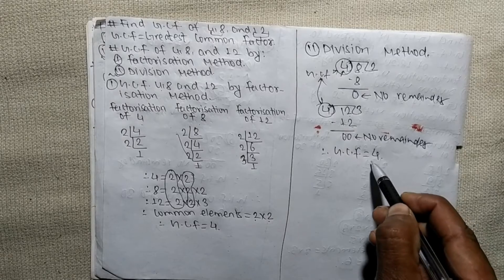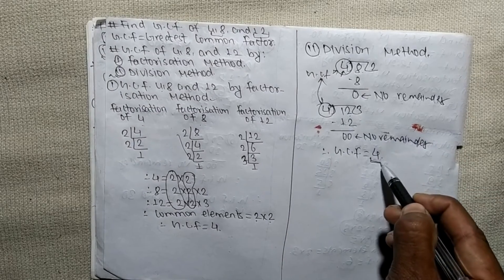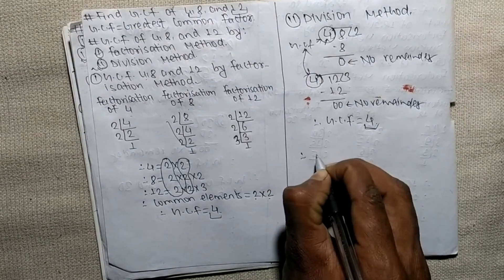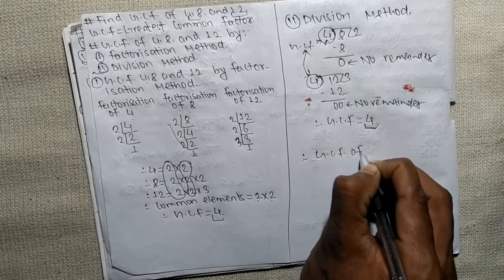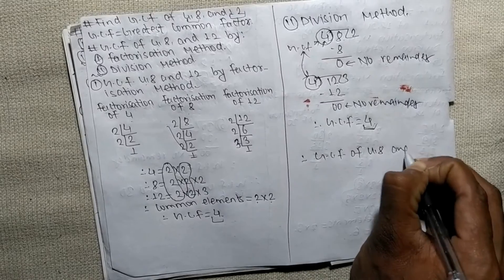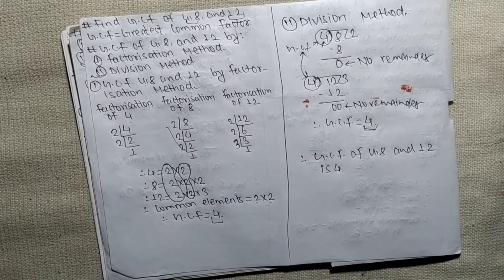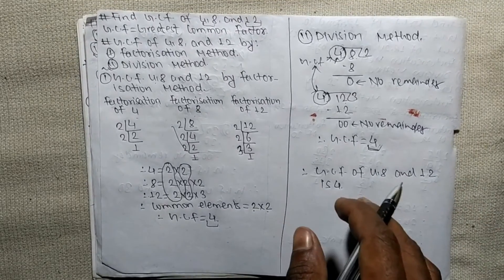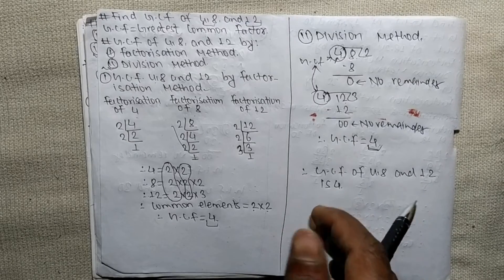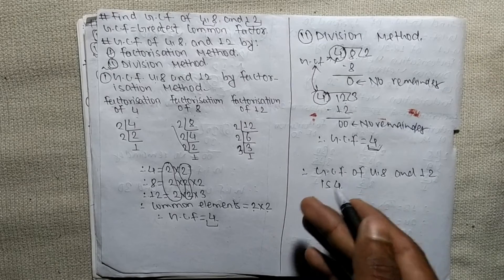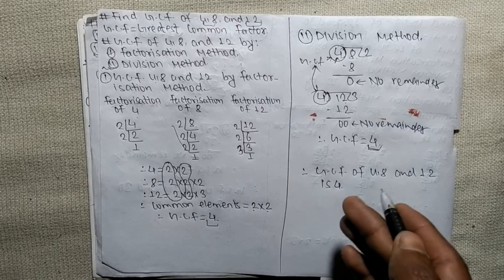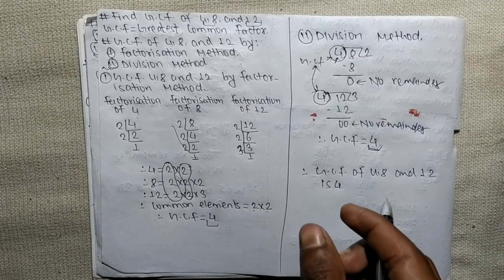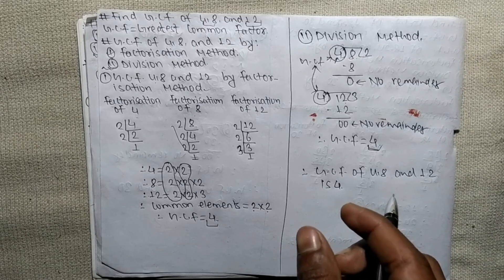So by the division method, GCF is 4, and by the factorization method, GCF is also 4. Therefore, GCF of 4, 8 and 12 is 4. You can find GCF by factorization as well as division method. If you have any questions from your book, school homework, tuition homework, or any doubt regarding science and math, just comment your question below and we shall provide a video solution. Thank you!